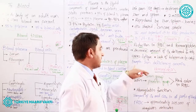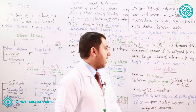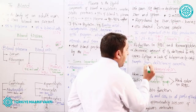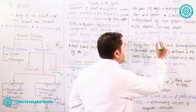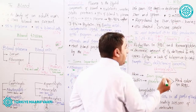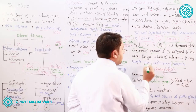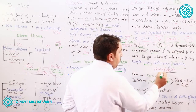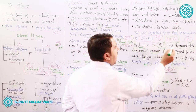The most common type of anemia is iron deficiency anemia. In this type, there is a reduction in iron in the RBC. The RBC amount decreases, making the person anemic due to iron deficiency in the body.